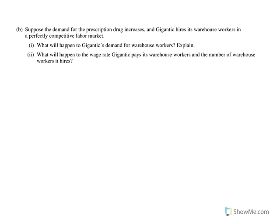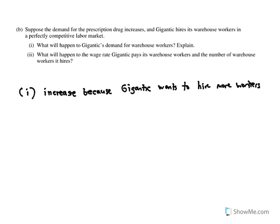On to letter B, which has us looking at an increase in demand for the prescription drug. Gigantic is going to hire its workers in a perfectly competitive labor market. What's going to happen to Gigantic's demand for warehouse workers? The idea behind B1 is derived demand — their demand for workers is going to increase because Gigantic wants to hire more workers to meet the increased demand for product. If there's an increase in demand for your product, there's an increase in demand for workers because we need more workers to make more product.